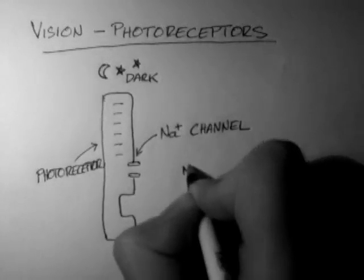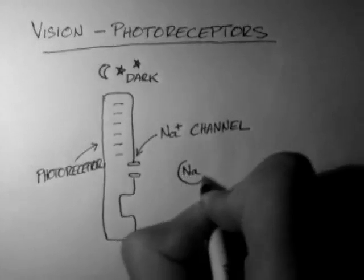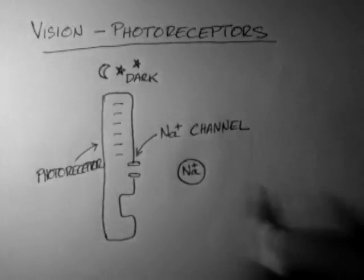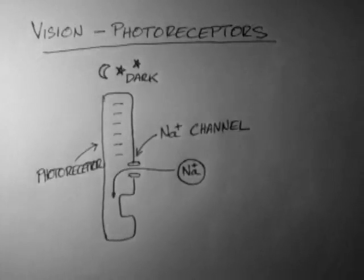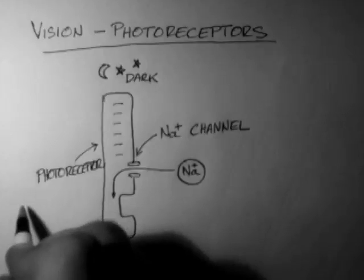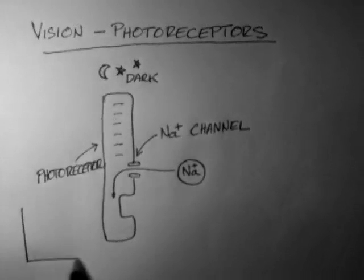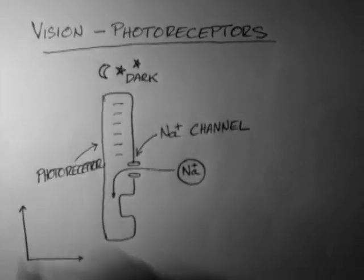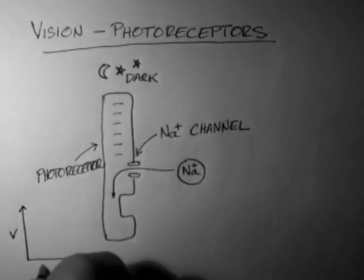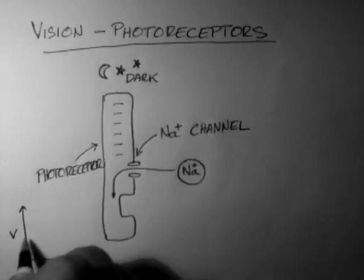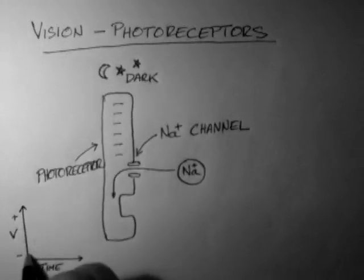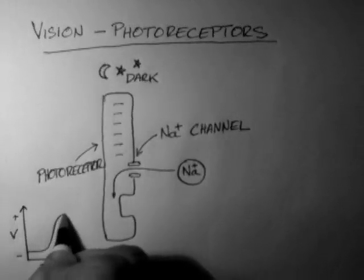Now, the sodium channel allows sodium ions, which are positively charged, to enter inside the photoreceptor. This makes the inside of the photoreceptor more positive. So if we look at the voltage over time, it's going to get more and more positive inside.